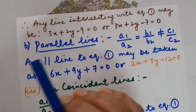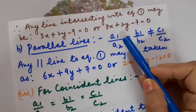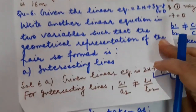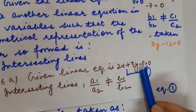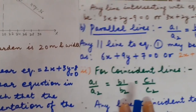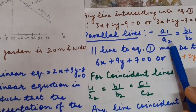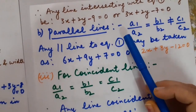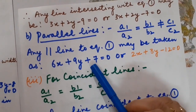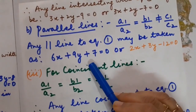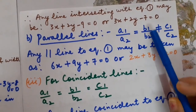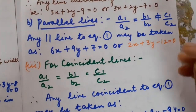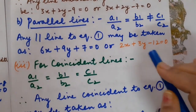For parallel lines, the condition is a1/a2 = b1/b2 but not equal to c1/c2. Given equation: 2x + 3y − 8 = 0. I take an equation like 6x + 9y − 7 = 0. Here a1/a2 = 2/6 = 1/3, b1/b2 = 3/9 = 1/3, so they are equal. But c1/c2 = −8/7 ≠ 1/3, so the condition for parallel lines is satisfied. You can take as many equations as you like as long as the condition is satisfied.